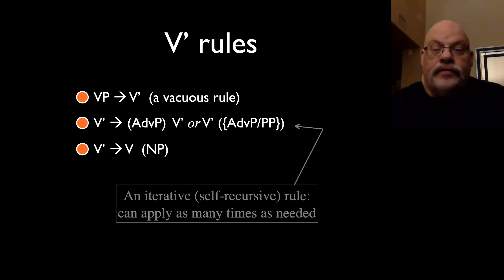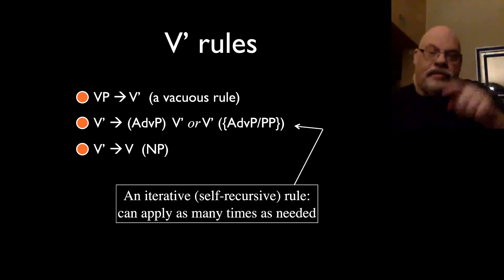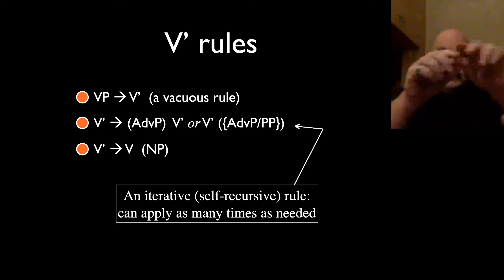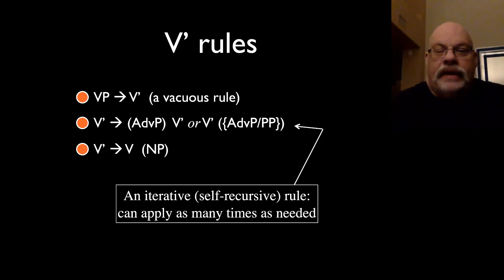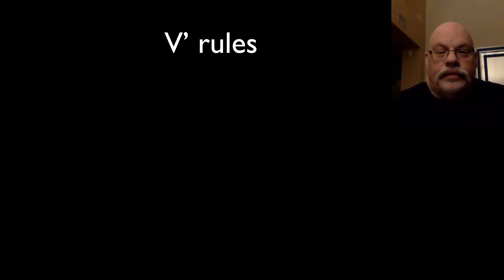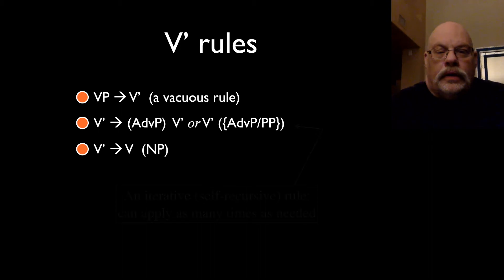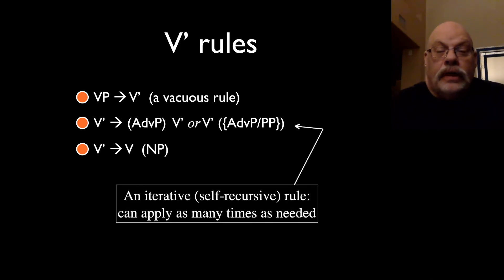Again, this rule is self-recursive, so it can apply as many times as you like, and it will get that stretched out structure you saw where each modifier is attached in. It can apply as many times as you need it to. The third rule is the rule that introduces the head verb and the direct object. So V bar goes to V and noun phrase, and of course, the noun phrase is optional.